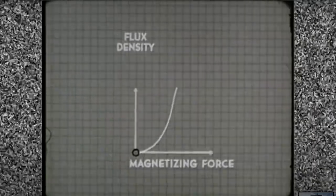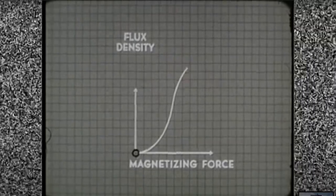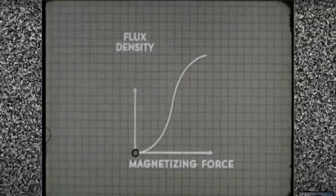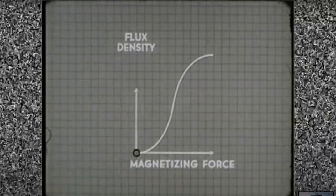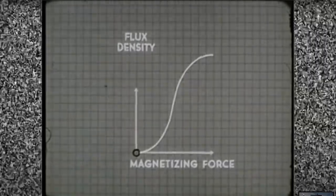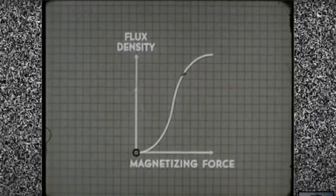But as we increase the magnetizing force, the curve flattens out because we are adding proportionately less to the flux density. Further increases in magnetizing force will have no appreciable effect on flux density.